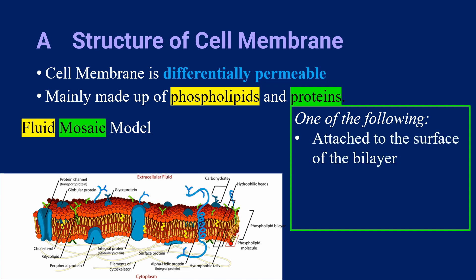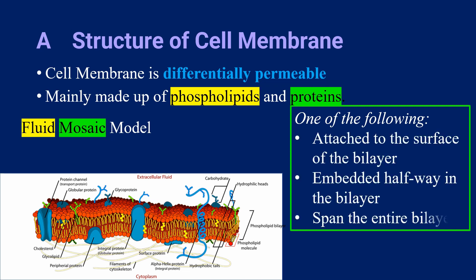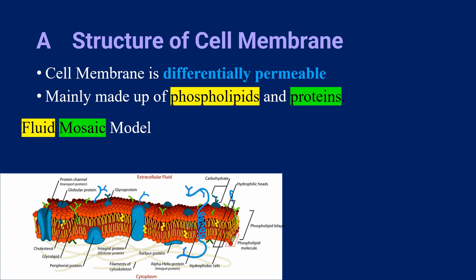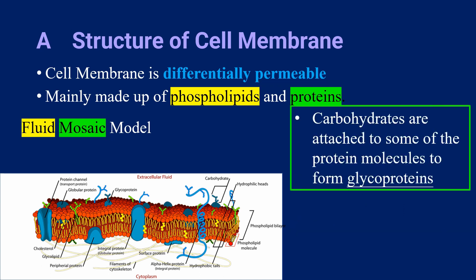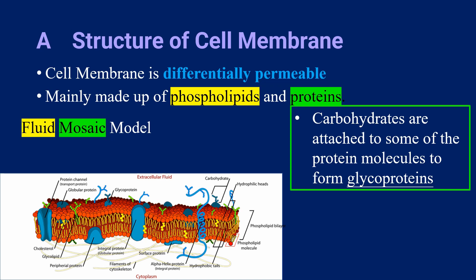Proteins are attached to the surface of the bilayer, embedded halfway in the bilayer, or span the entire bilayer. On some of the proteins, carbohydrates are attached to form glycoproteins.